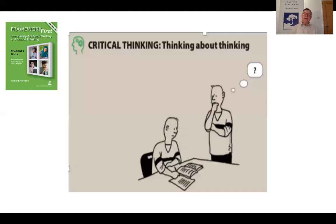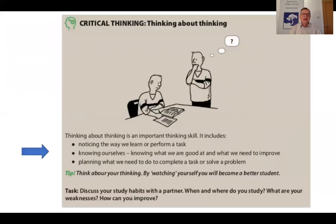Let's start with thinking about thinking. In this illustration, a man is looking at himself — he's watching himself, stepping outside his body. I've taken this illustration from my book, Framework First, by the way. Thinking about thinking is an important thinking skill. It includes noticing the way we learn or perform a task, knowing ourselves — what we are good at and what we need to improve — and planning what we need to do to complete a task or solve a problem.